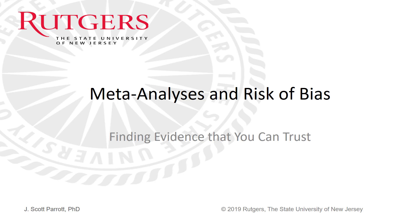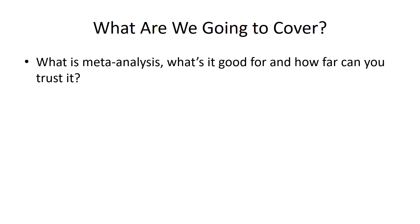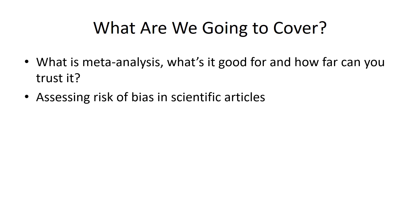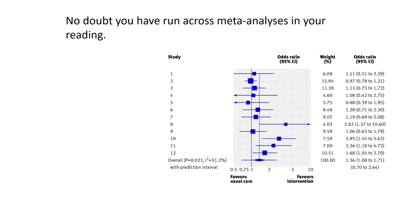We're going to talk about risk of bias, and I'm going to set it up within the context of making sense of meta-analysis. Our fundamental question is: are we looking at or finding evidence that we can really trust? We'll cover what meta-analysis is, what it's good for, how far you can trust it, assessing risk of bias in scientific articles, and how to use the Cochrane risk of bias tool, or at least a modified version of it.